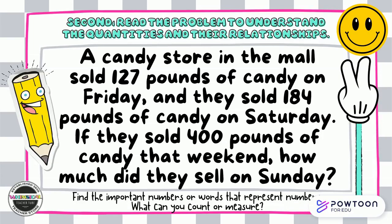Second, read the problem to understand the quantities and their relationships. A candy store in the mall sold 127 pounds of candy on Friday and they sold 184 pounds of candy on Saturday. If they sold 400 pounds of candy that weekend, how much did they sell on Sunday? Find the important numbers or words that represent numbers. What can you count or measure? Pause the video and discuss it with your partner.